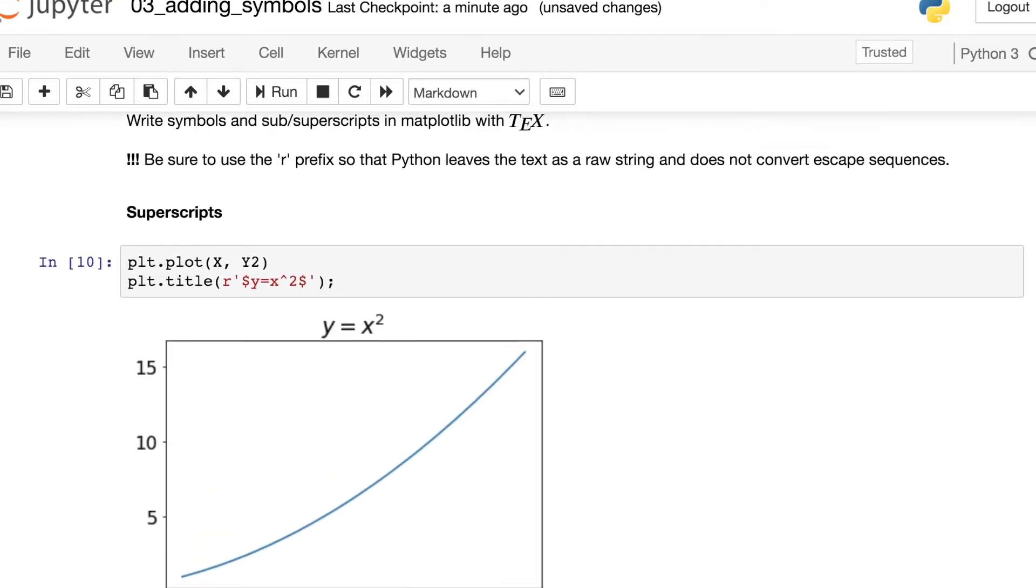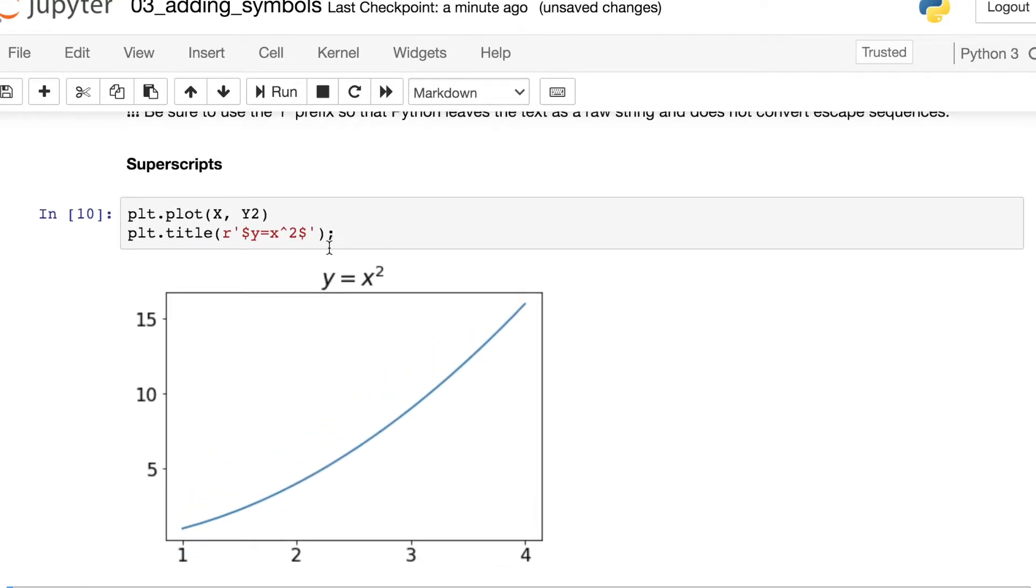So now that we hit enter, we see Y equals X squared and the 2 has been brought into the superscript because we used that caret and surrounded our equation by two dollar signs.